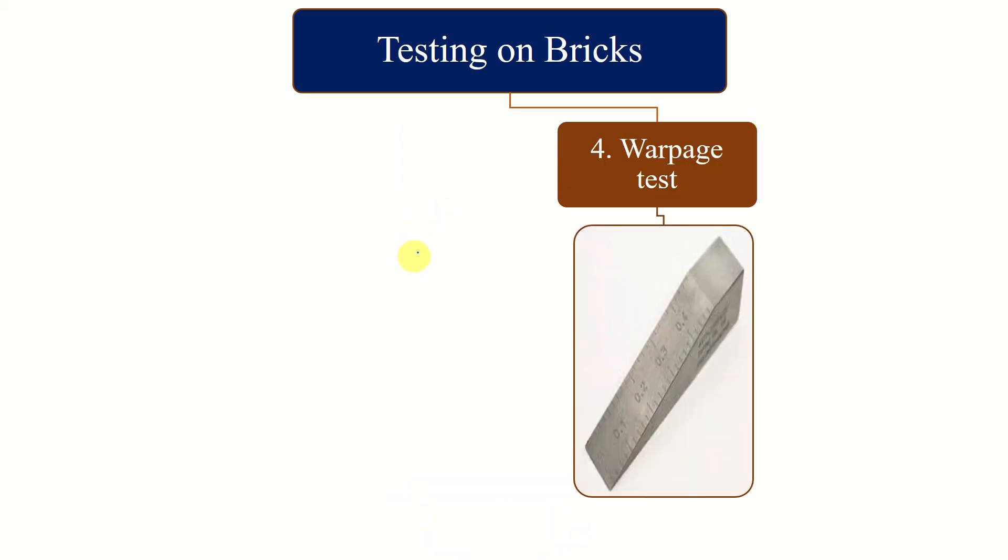Now warpage test. That is again according to Indian standard 3495 part 4. Warpage is a parameter measured with the help of flat steel or glass surface and measuring ruler graduated from 0.5. We take the test for 10 bricks randomly from the brick lot. So this is an inclined surface with the ruler and dimensions here. Now the flat surface of brick is placed.